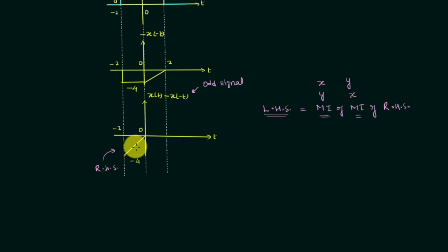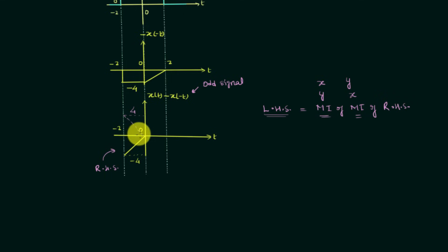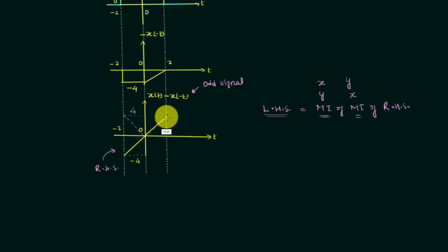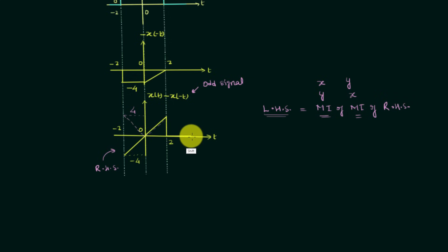We have the right-hand side. Performing the mirror image about the X axis gives a signal with value 4. Then performing the mirror image about the Y axis gives the left-hand side of the odd signal. When t is less than minus 2 and when t is greater than plus 2 this signal is equal to 0. This is the complete waveform of X(t) minus X(-t).